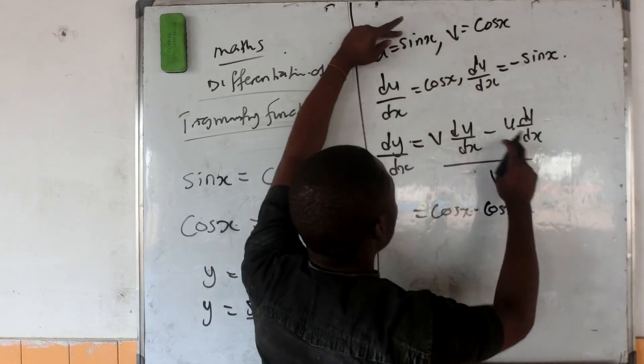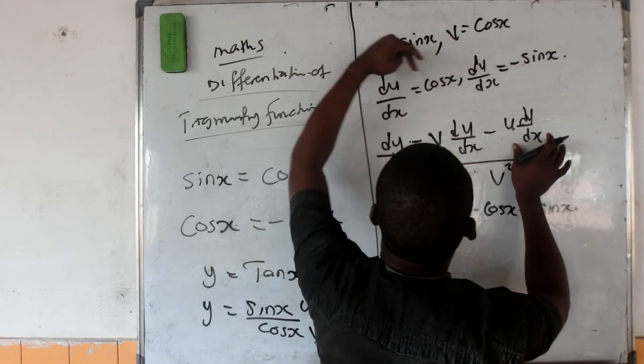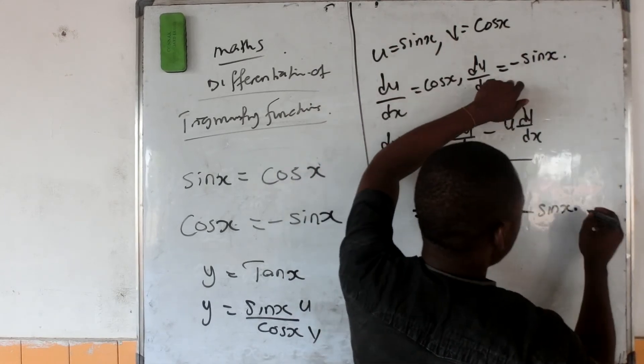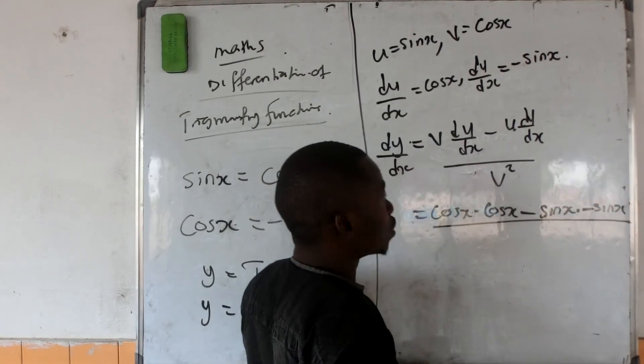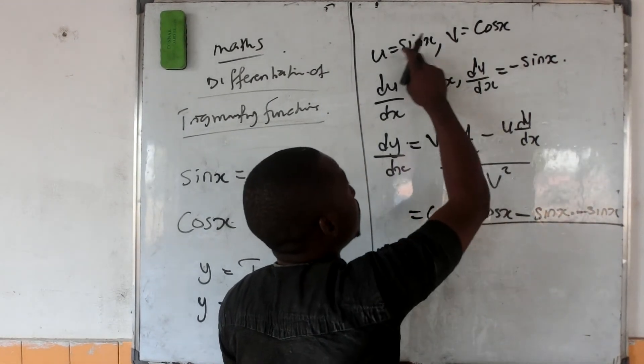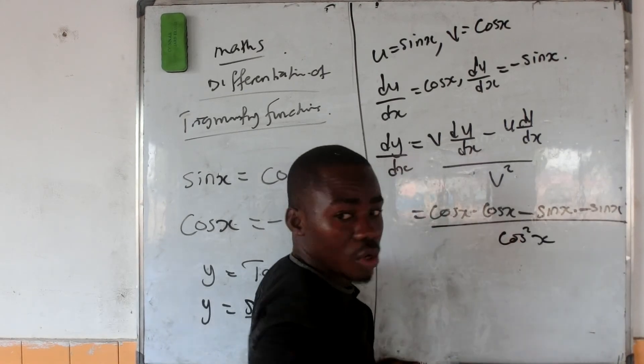What is the dv/dx? The dv/dx is minus sin x. Everything will be over, what is your v? Your v is cos x, which will be cos squared x.